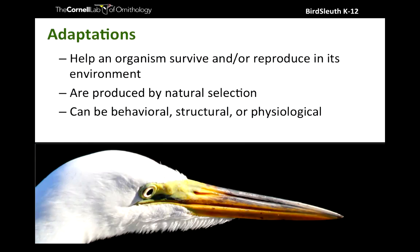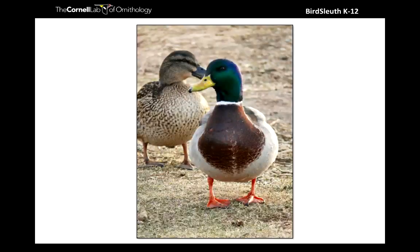To talk about the evolution of flight we need to understand some terms. Adaptations are things that help an organism survive or reproduce in its environment - they improve its fitness and are produced by natural selection, honed for the environment the animal lives in. They can be behavioral, structural, or physiological. When it comes to birds there are many adaptations you can see displayed in a humble mallard duck. Take a look at the drake - the male with the green head - and share some adaptations you notice.